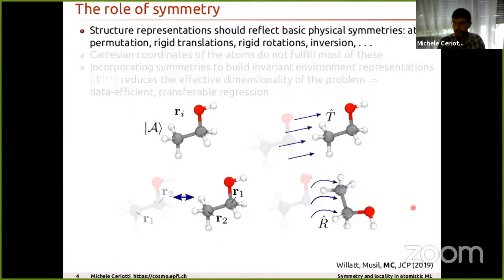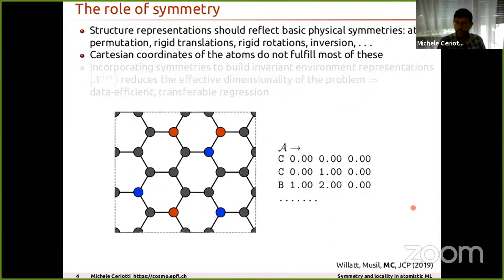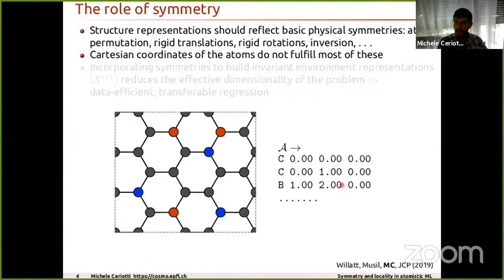If you want to predict the energy of a molecule and there is no external field, the energy is exactly the same regardless of orientation. The simplest description — atomic species plus Cartesian coordinates — doesn't fulfill any of these symmetries. If you just feed Cartesian coordinates into a machine learning scheme, you get duplicated inputs and all kinds of problems you want to avoid.